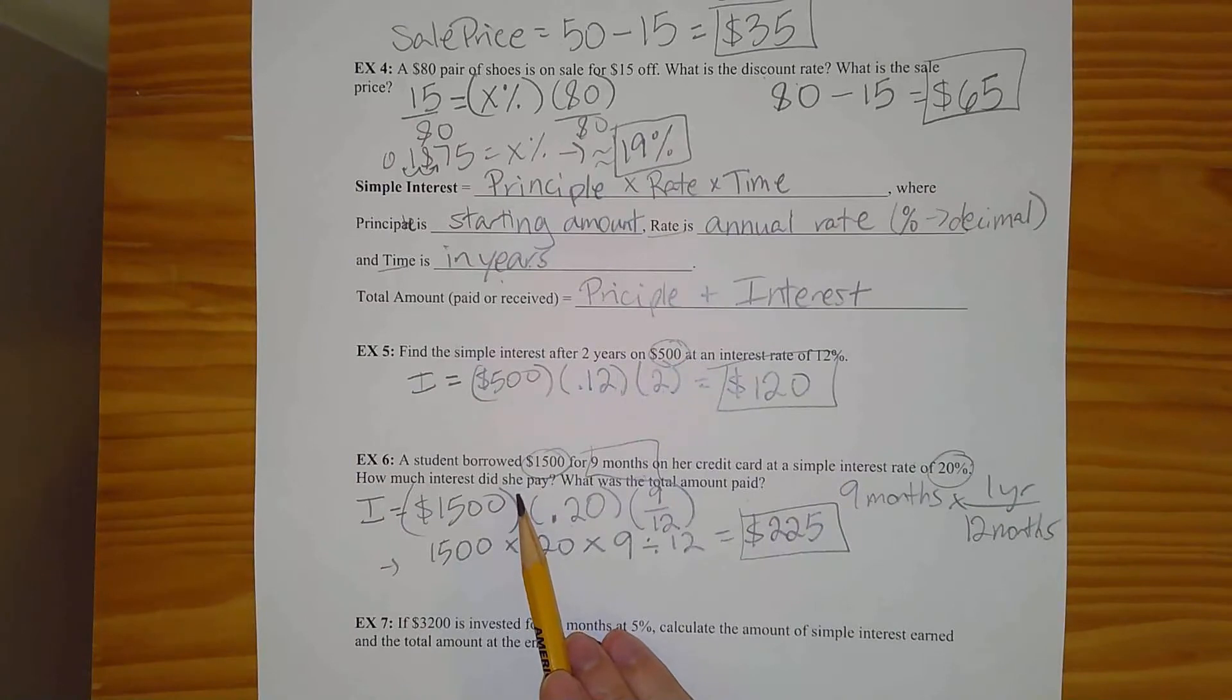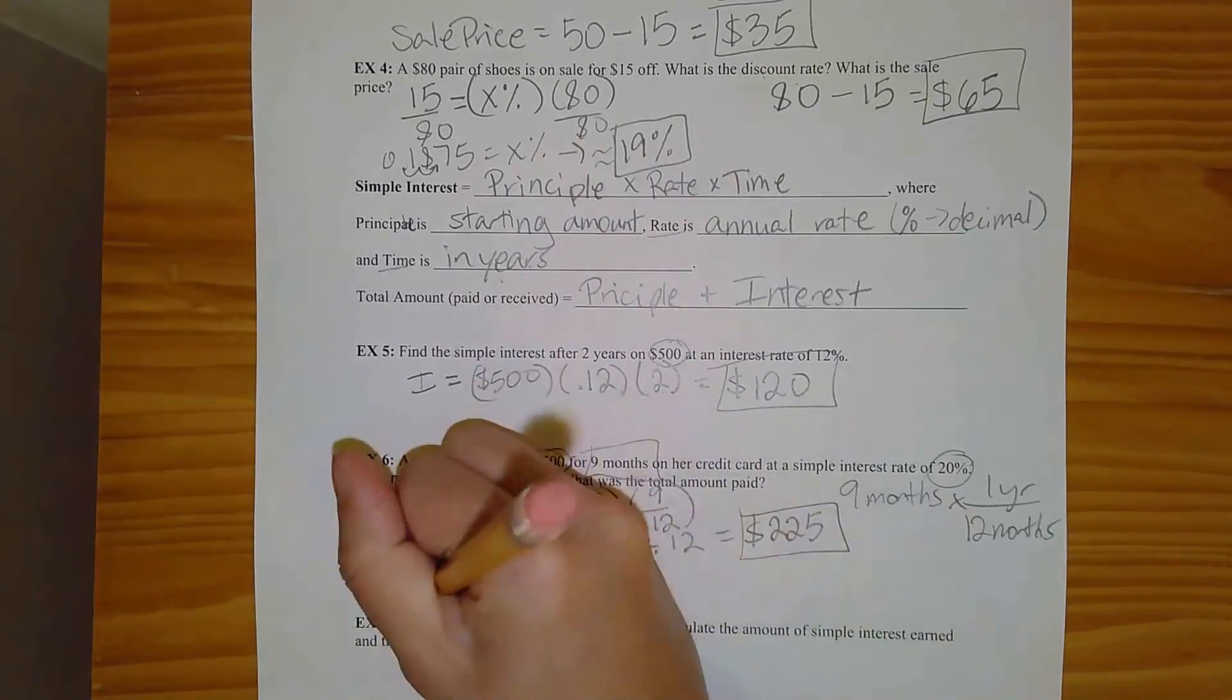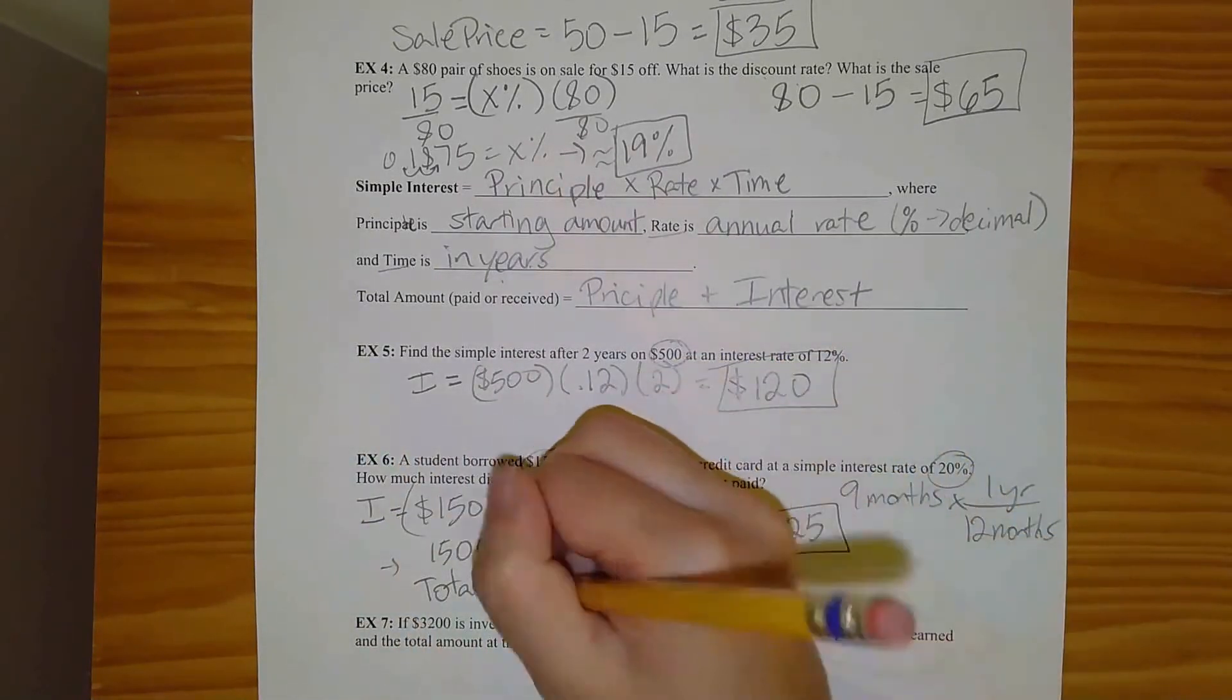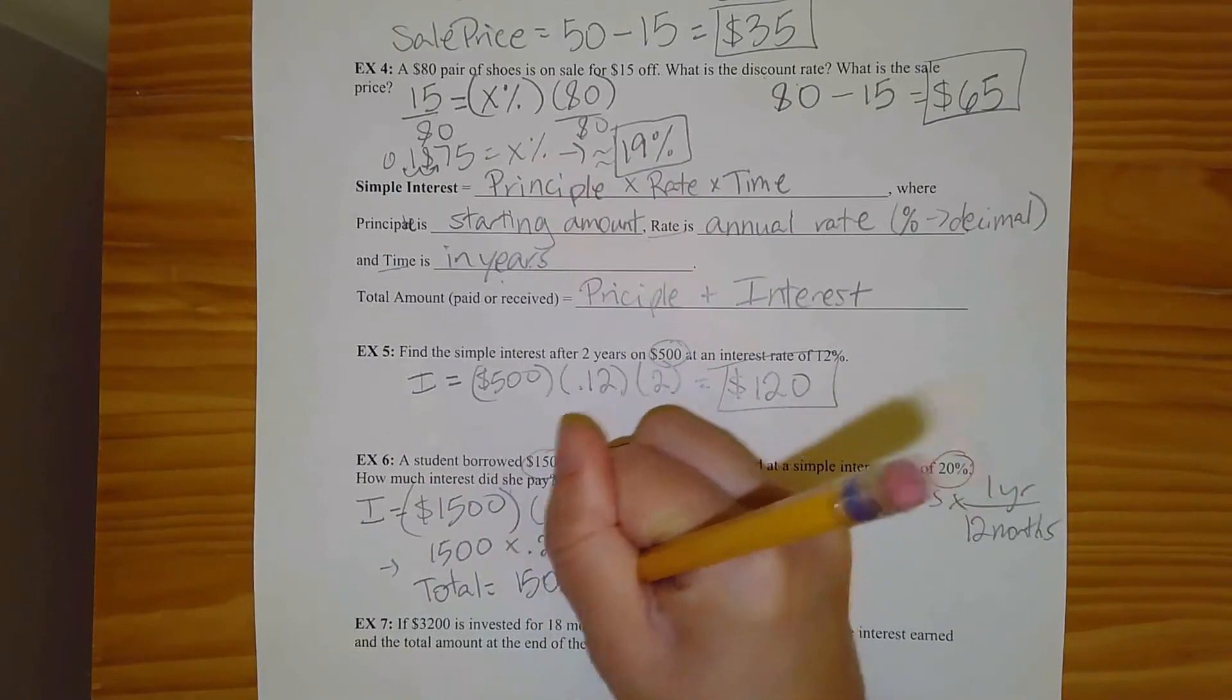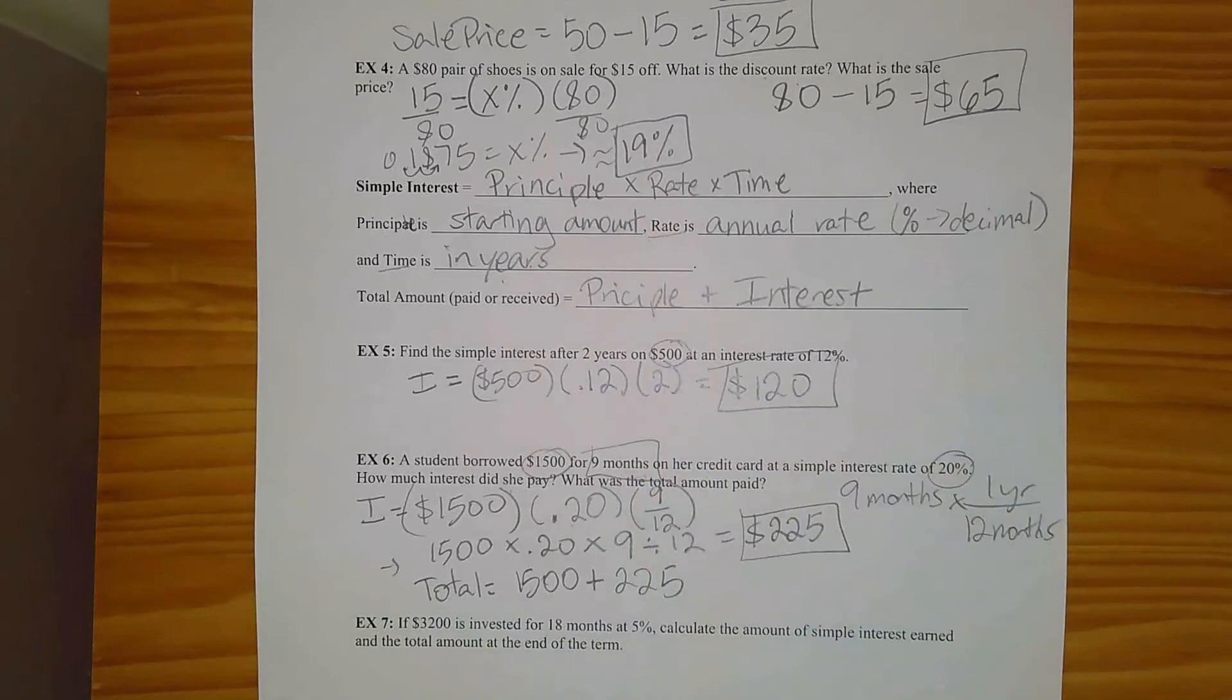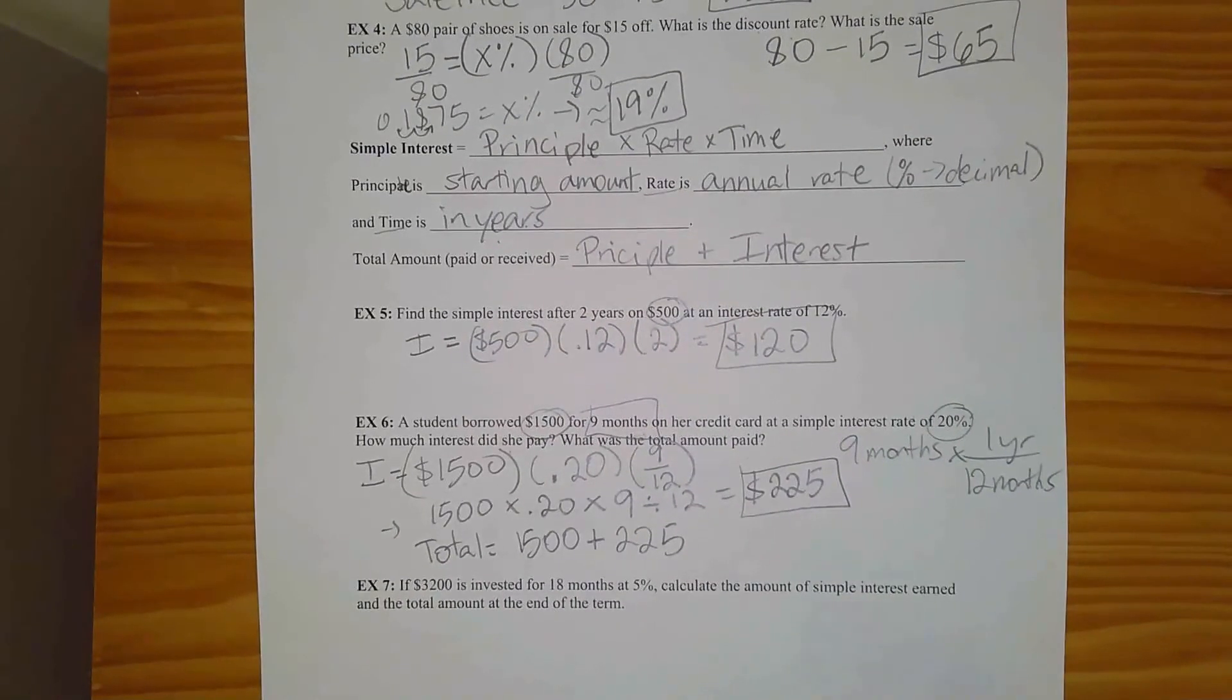Remember with any word problem, you always go back to the question. Make sure you answered the whole thing. And we have not answered everything yet. We have how much interest she paid. But we do not have an answer yet for the second question. What was the total amount paid? So the total amount would be that original amount that she borrowed, the 1500. And then we're going to add in the interest.